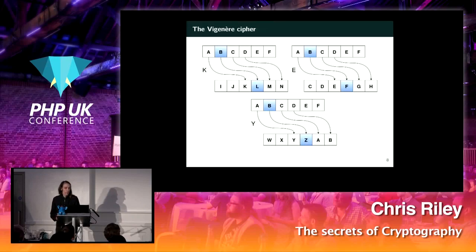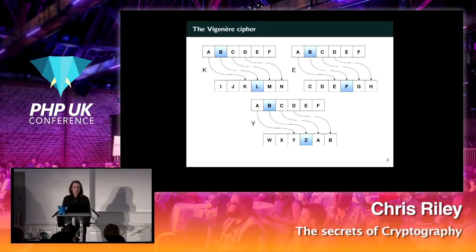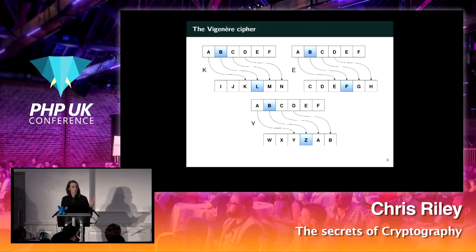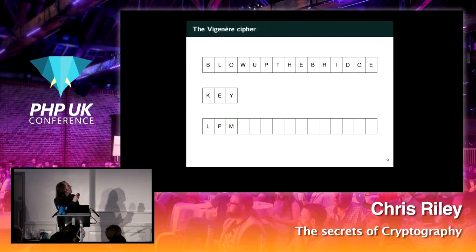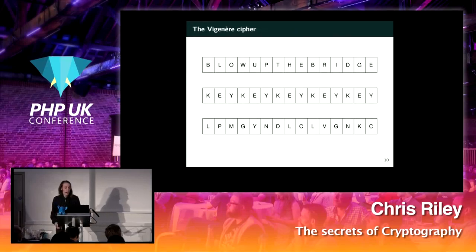How the Vigenère cipher works: in order to encode a message you first pick a key — in this simple example I've picked the key 'key'. Using the letters, we set A to be equal to the first letter of the key and get a Caesar shift for that, do the same for E and Y, and then use those shifts one after the other. So we encode the first letter of our message using the first Caesar shift represented by K, the second with E, the next with Y. Once you run out of letters in your key, you repeat it. We continue reusing this key and get out the cipher text at the bottom.